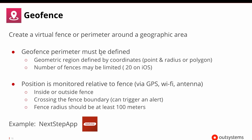There's a geofence plugin that creates a virtual perimeter around a particular geographic area. To do that you have to define a set of coordinates as to where the virtual fence should be. You can either do a circular region with a point and a radius, or you can do different shapes like polygons. Your position can be monitored relative to the fence — whether you're inside or outside — and then it can send notifications and alerts when you walk across the boundary. The fence radius needs to be at least 100 meters.